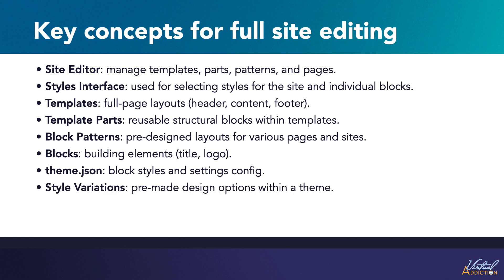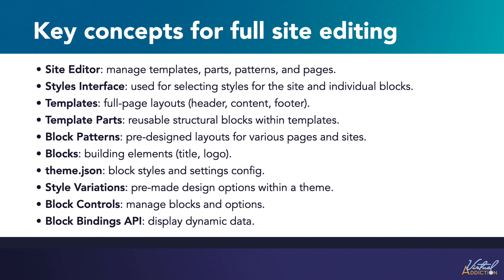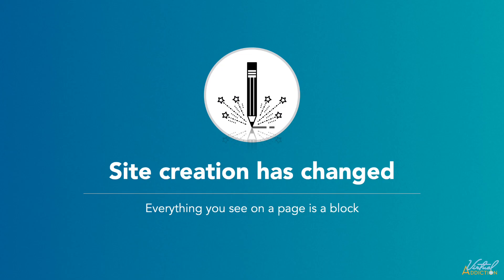Theme.json is the new theme configuration file that has default styles and settings for blocks. We have style variations, which let users choose from different pre-made designs within a single theme. You can use block controls to manage which blocks and block options are available to users. A block binding API uses blocks to display dynamic data. Finally, one important aspect is the deliberate focus on improving the performance of your WordPress website. All of these features are closely tied together, and you can use some of them on their own, even within classic PHP-based themes.